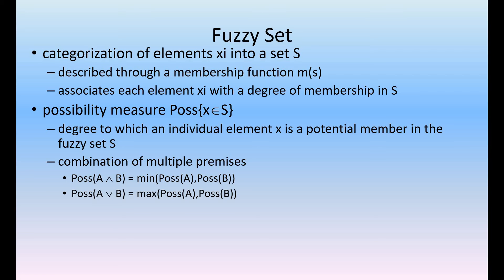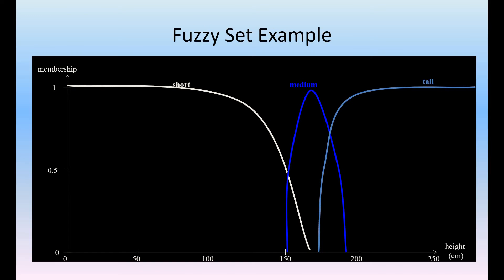The fuzzy sets can be represented using membership functions. The degree to which an individual element is a potential member in the fuzzy set — that is the possibility measure. Is it medium tall, high tall, or low tall? Is it medium rich, high rich, or low rich? That is how we measure the degree at which it is correct — the degree of membership of that particular function.